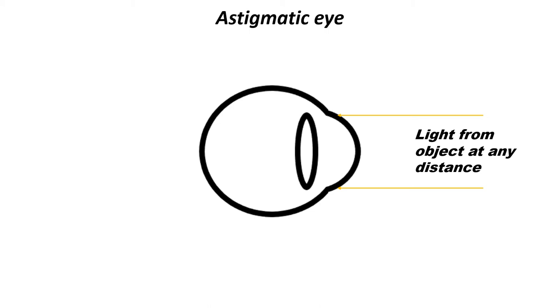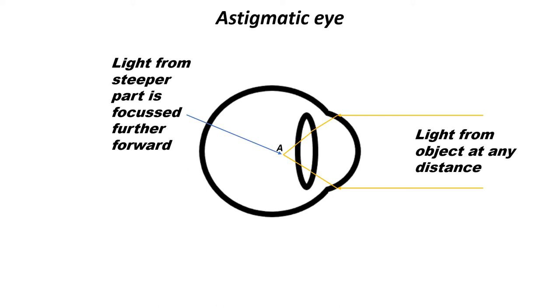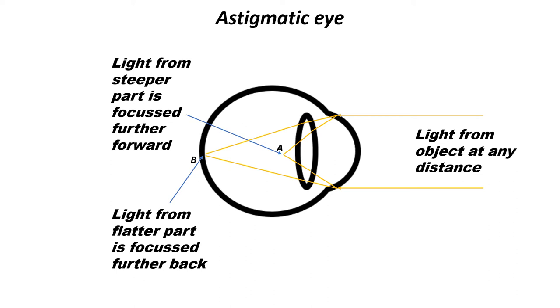like I said in the previous slide, the steeper part of the cornea focuses the light further forward, but the flatter part of the cornea focuses light further back. And because the light is not all being focused at the same point and not onto the retina, the person's vision appears blurry and distorted.